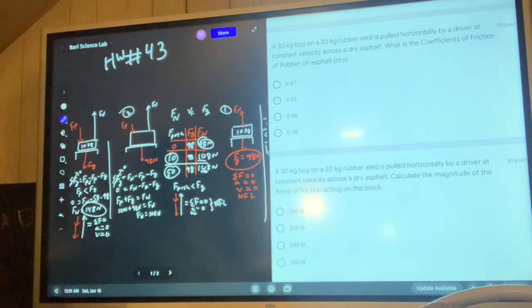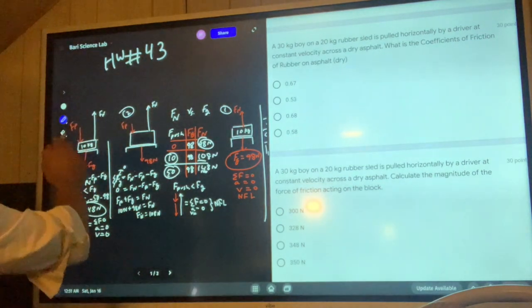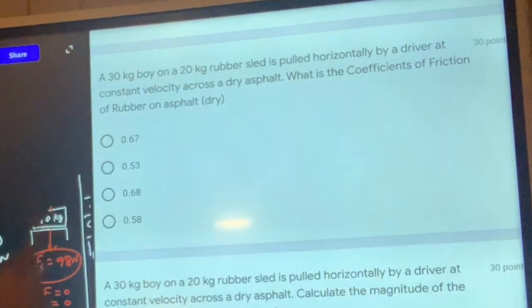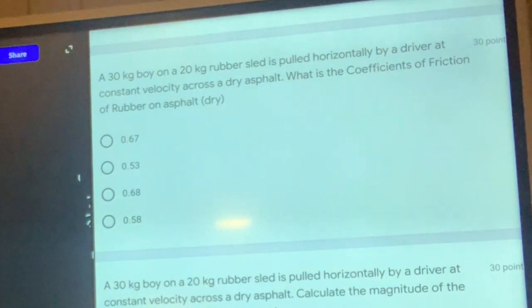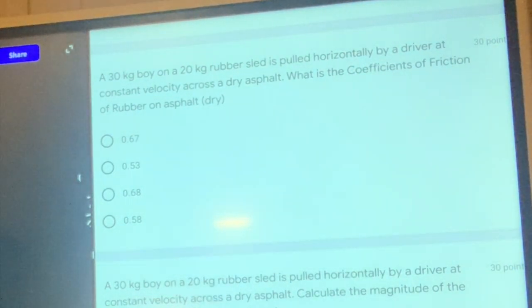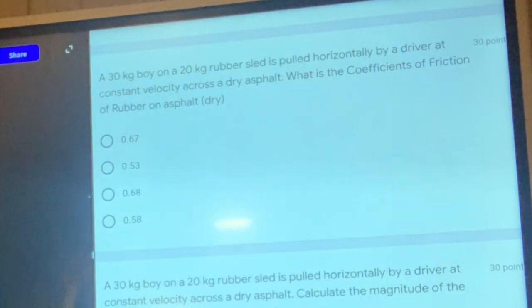In this video I'm going to go over homework 43. Problem number one: a 30 kilogram boy on a 20 kilogram rubber sled is pulled horizontally by a driver at constant velocity across dry asphalt. What is the coefficient of friction of rubber on asphalt?